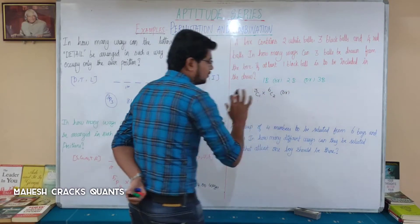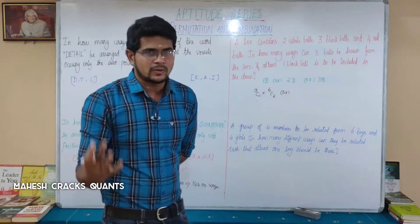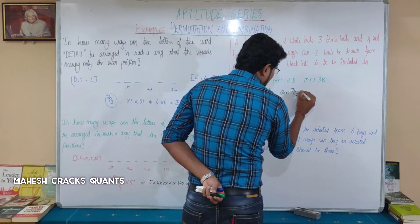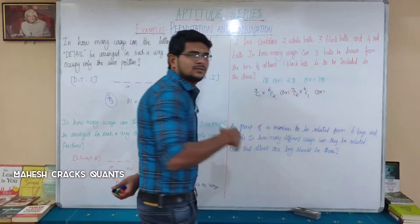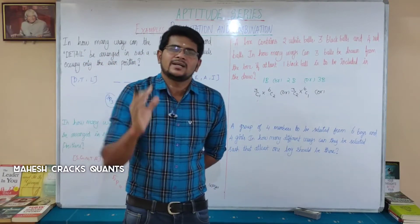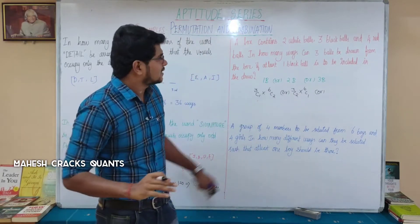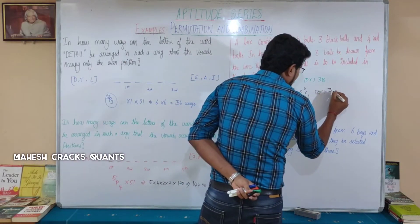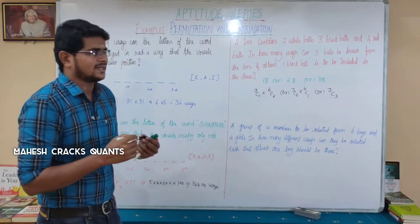Case 3: all 3 black balls — choose 3 from 3 black balls, giving 3C3. Now expanding: 3C1 = 3, 6C2 = 6×5/(2×1) = 15, 3C2 = 3×2/(2×1) = 3, 6C1 = 6, and 3C3 = 3!/(3!) = 1.